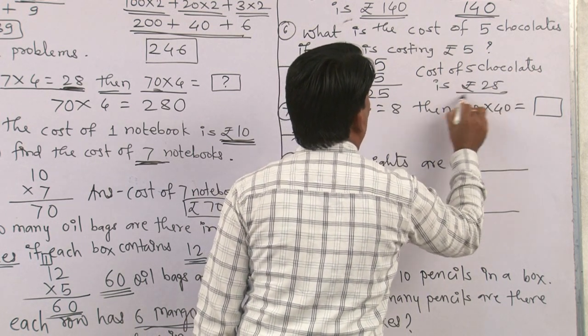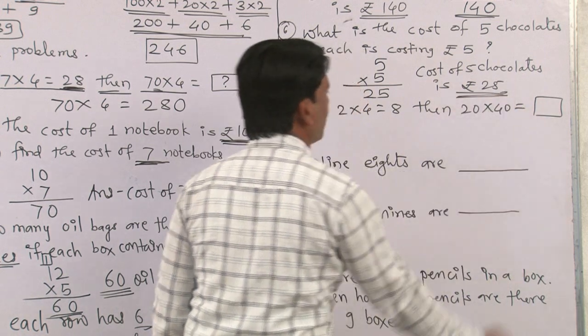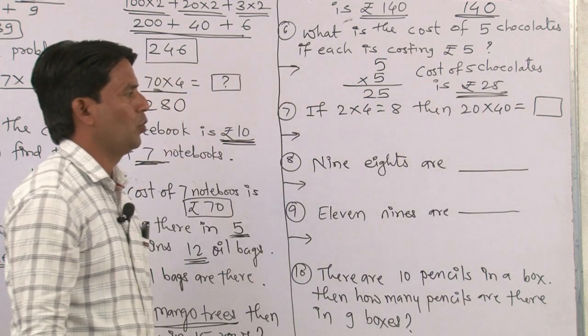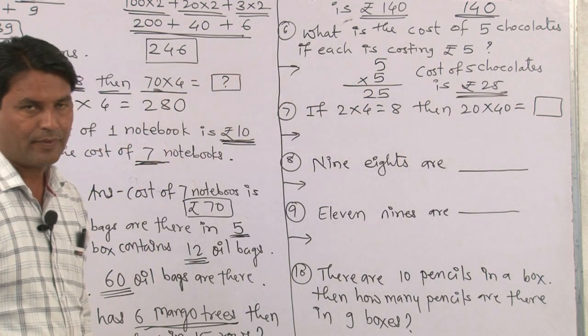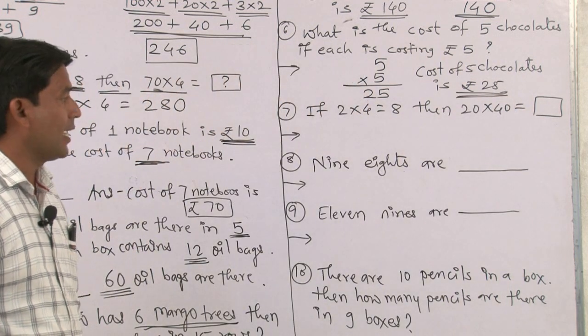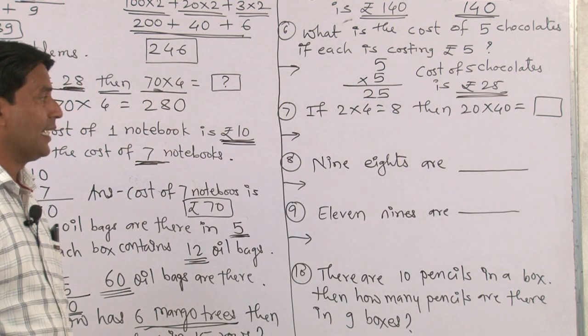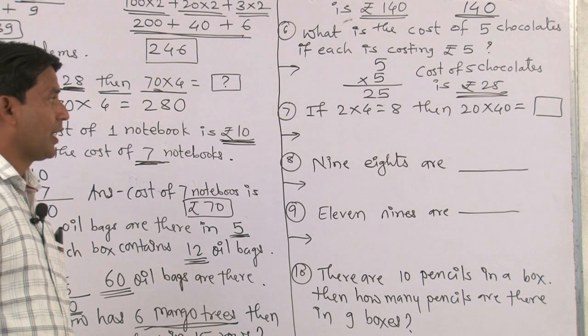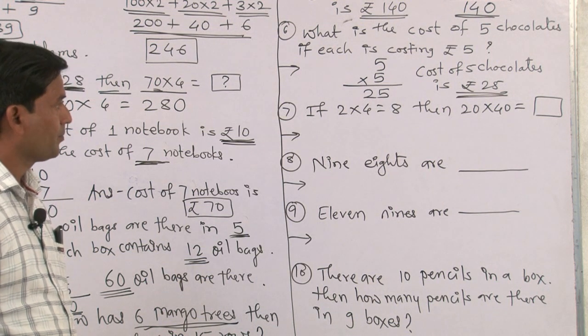Fifth word problem: Find the total price of 7 cakes if each cake costs rupees 20. We do multiplication: 20 multiplied by 7. 7 zeros are 0, and 7 twos are 14. So the cost of 7 cakes is rupees 140.